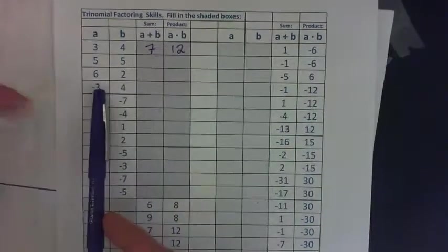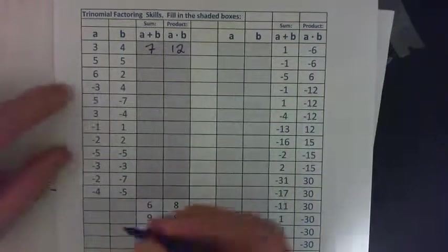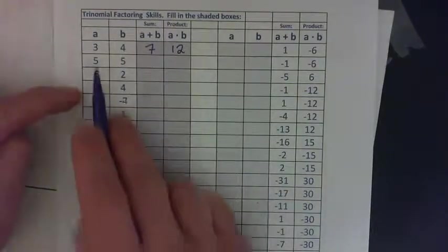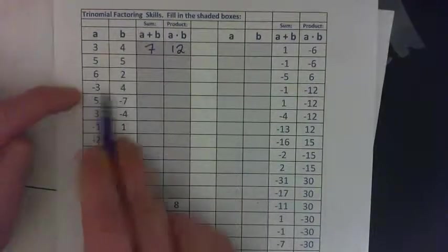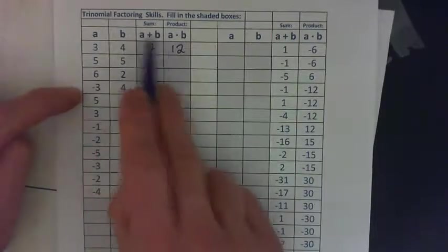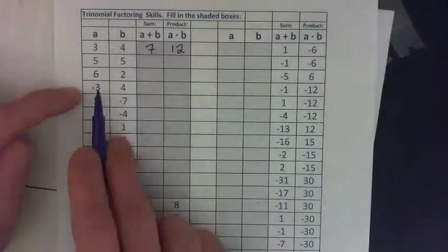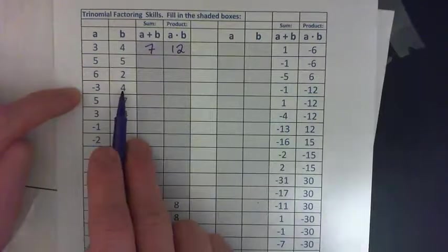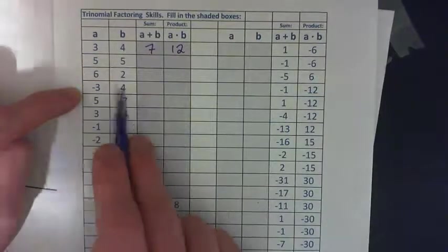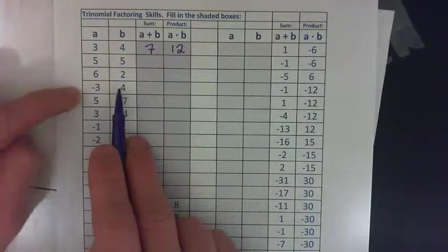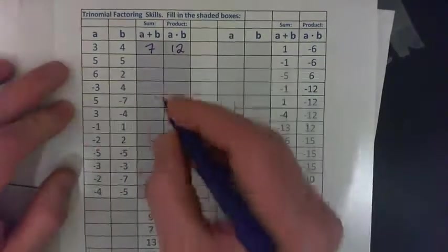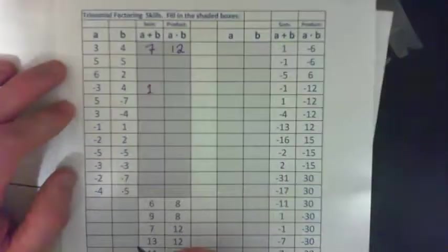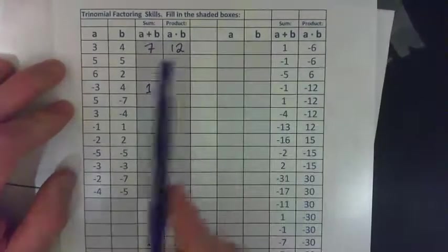I'll come down to this row and do negative 3 and 4. So A is negative 3, B is positive 4. A plus B means add these together: negative 3 plus 4 — that's 3 negatives plus 4 positives. 3 bad guys, 4 good guys — that would leave positive 1.